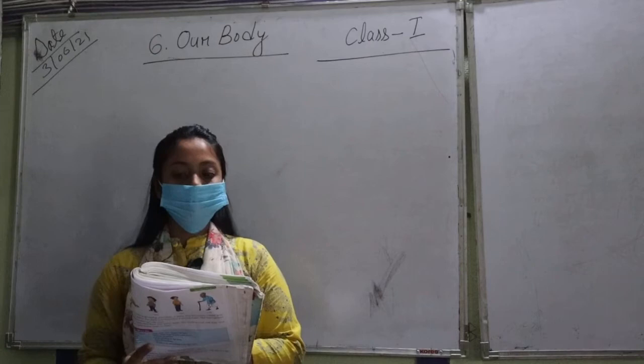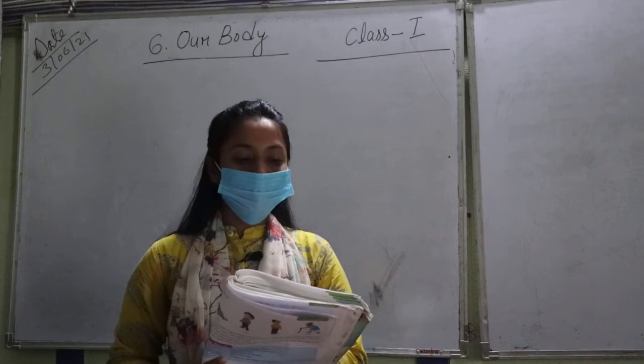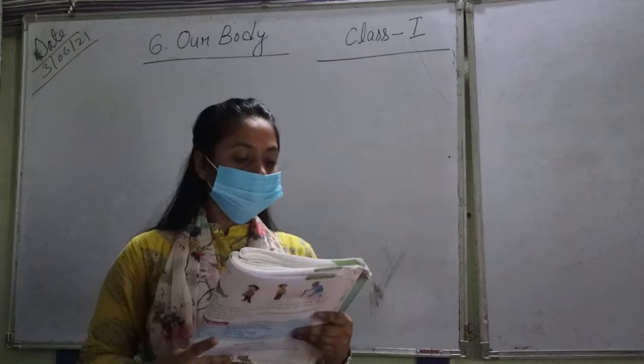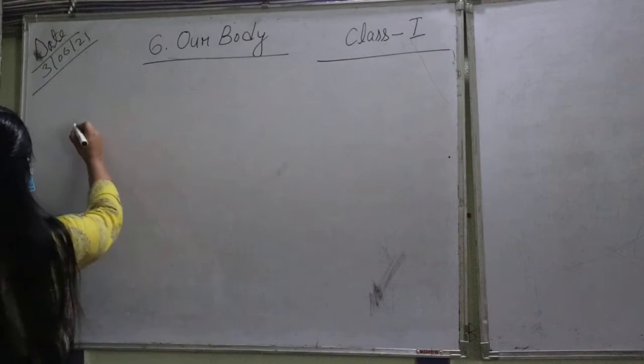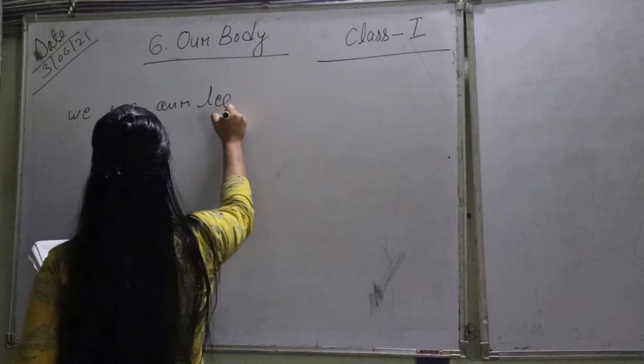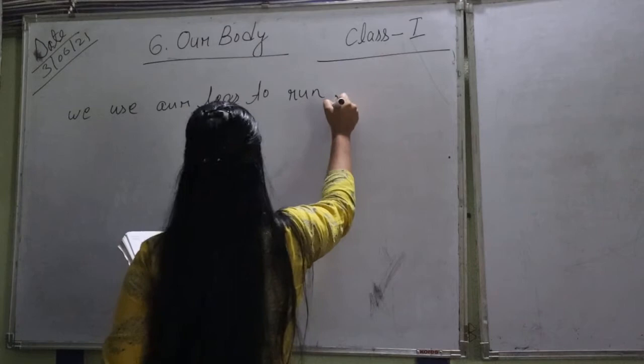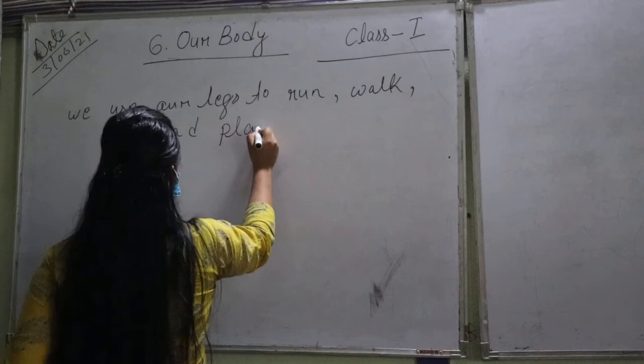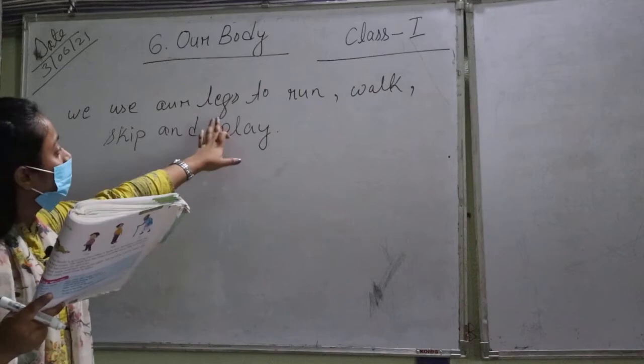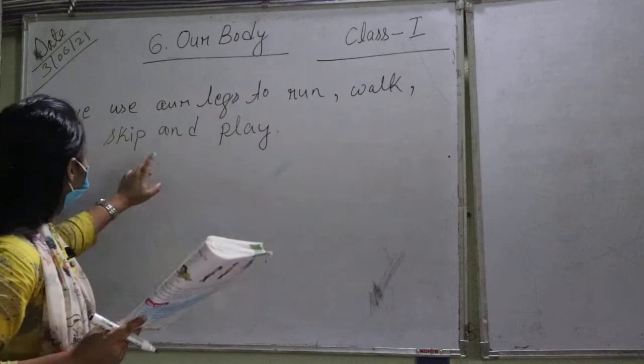So we use our different parts of our body. We use our legs to run, walk, skip and play.